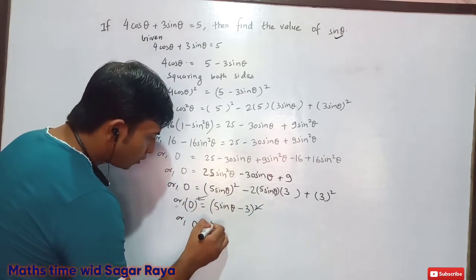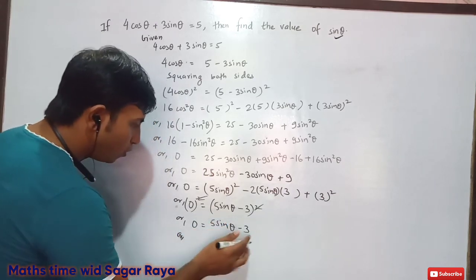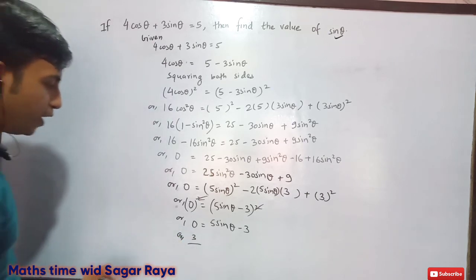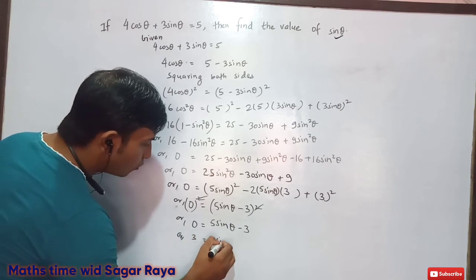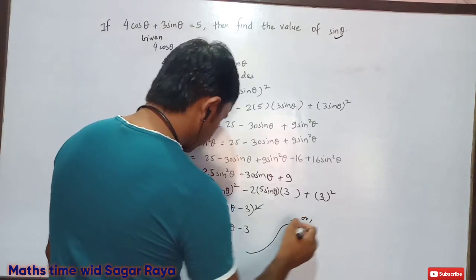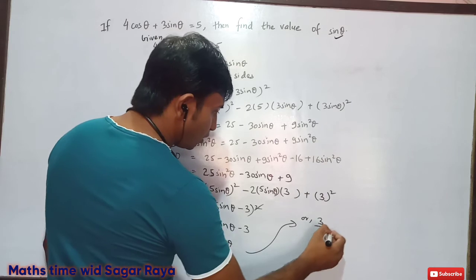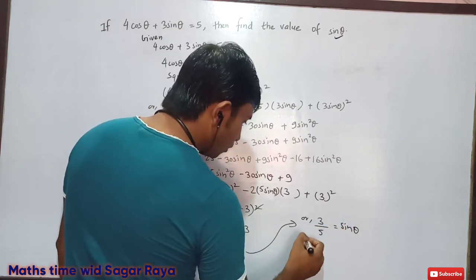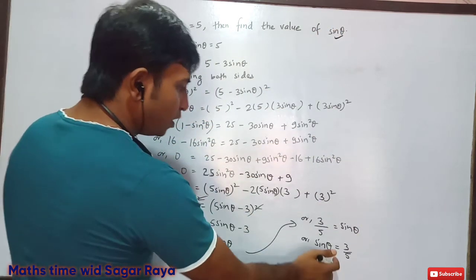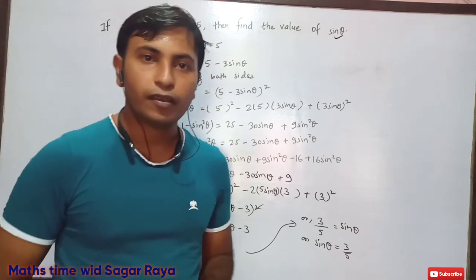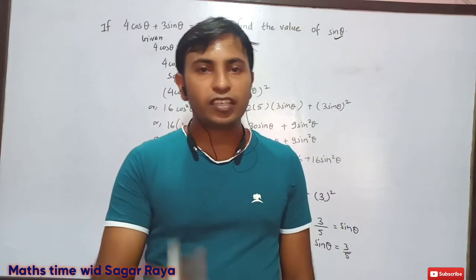Bringing −3 to the left side: 3 = 5 sin θ. Dividing both sides by 5: sin θ = 3/5. So our answer is sin θ = 3/5. If you really liked this video, please give it a like and share it with your friends. See you in the next video — thank you!